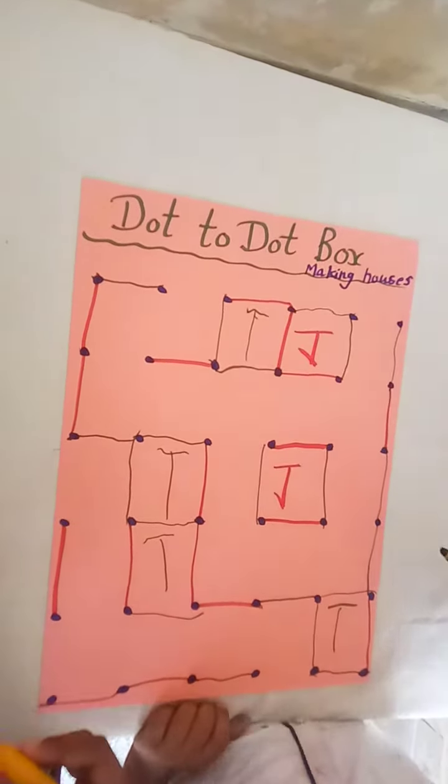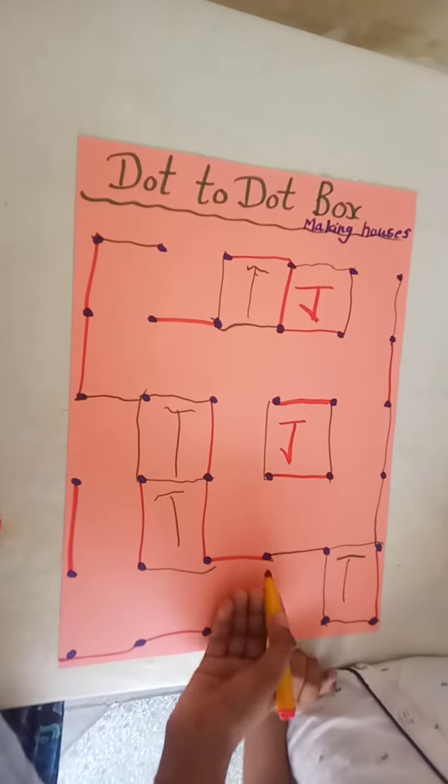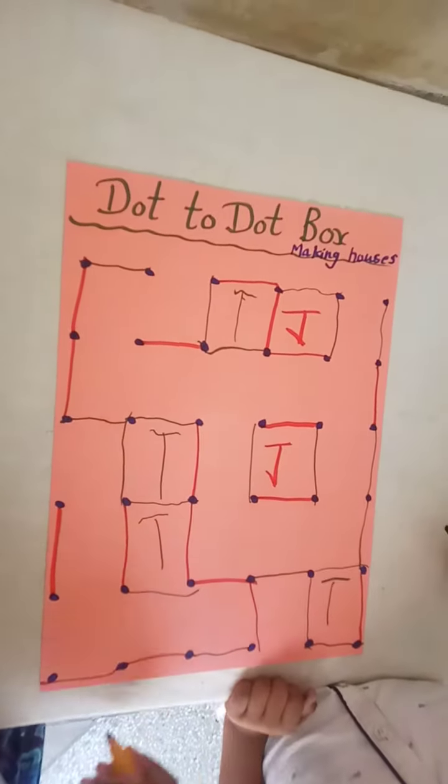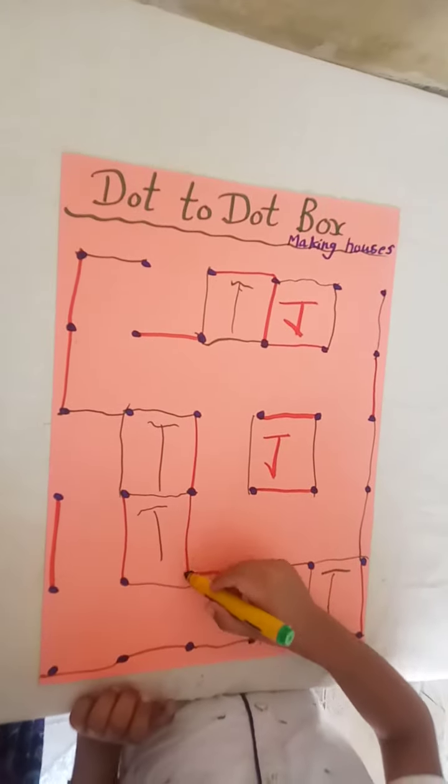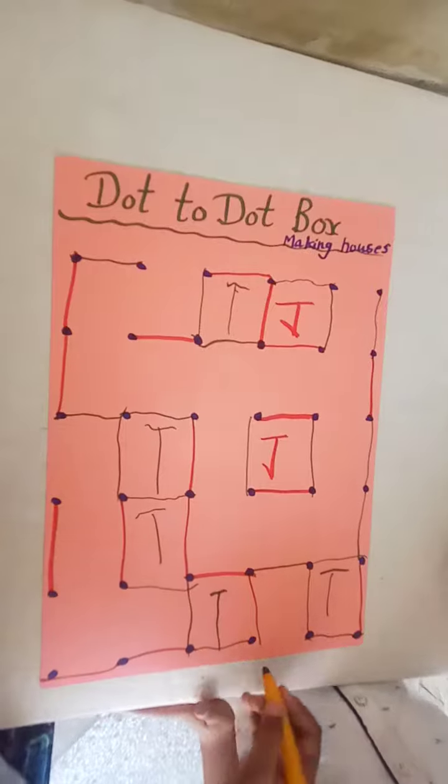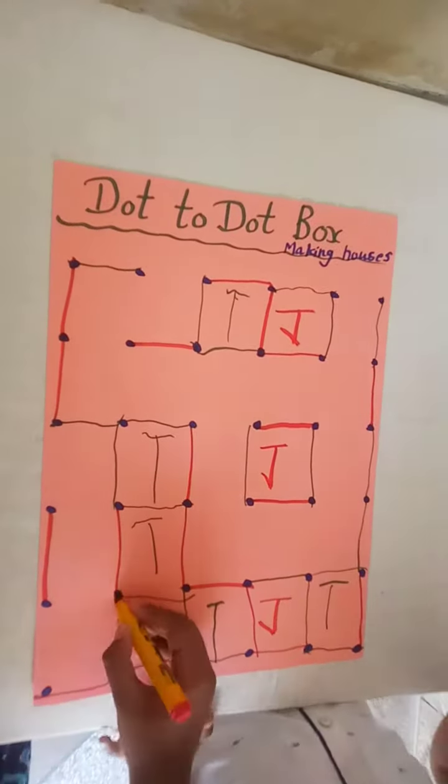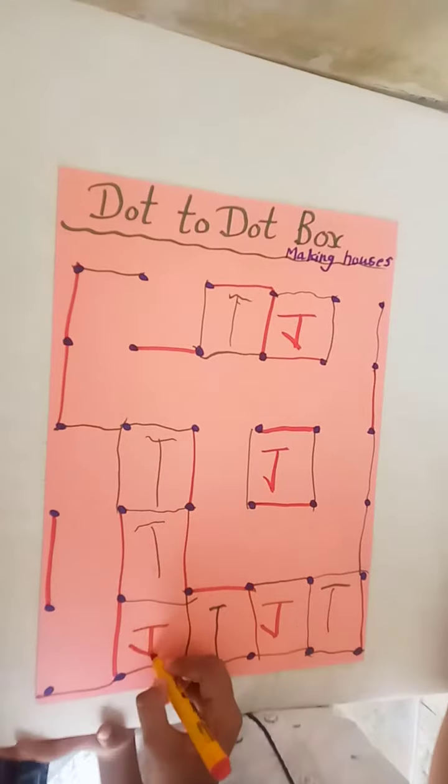This is a Tanish house. Now join the dots. First you can make a house. Very good, well done. Now making a new house, okay, well done.